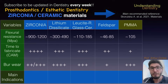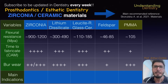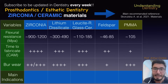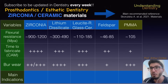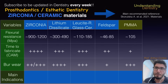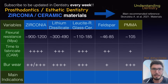Looking at time to fabricate: zirconia needs to be sintered, then polished and glazed — there are laboratory steps involved. Lithium disilicate, like Emax, doesn't need sintering but needs to go to the oven for crystallization. The other materials also vary according to this factor, which will affect your patient workflow.